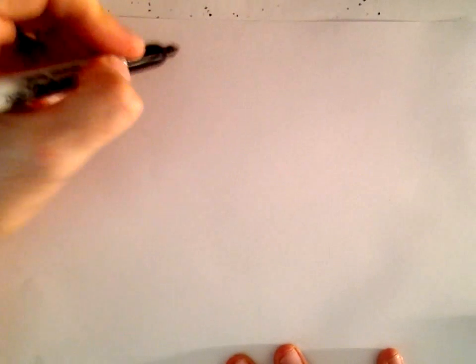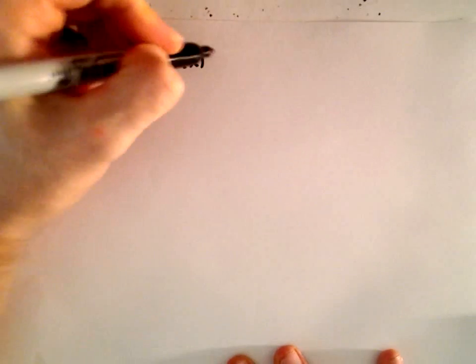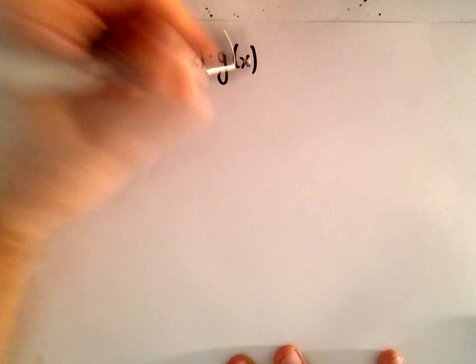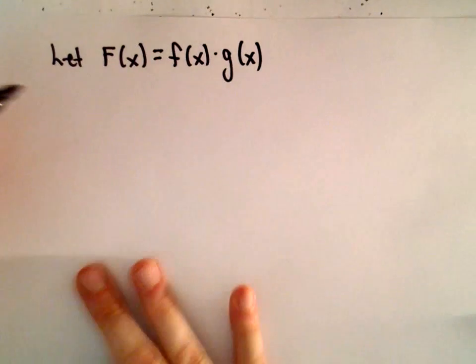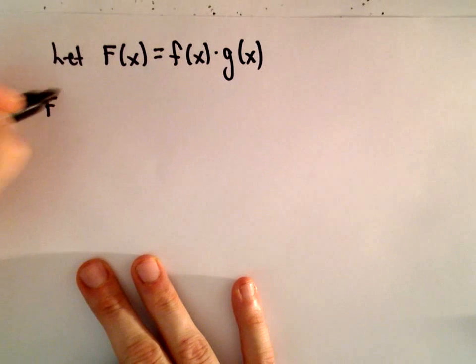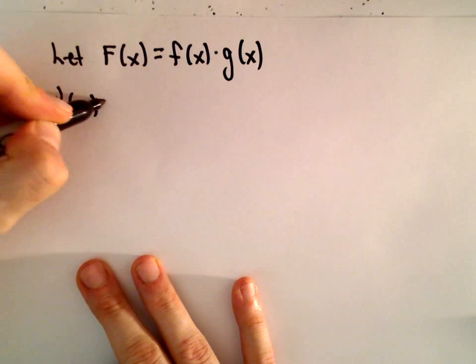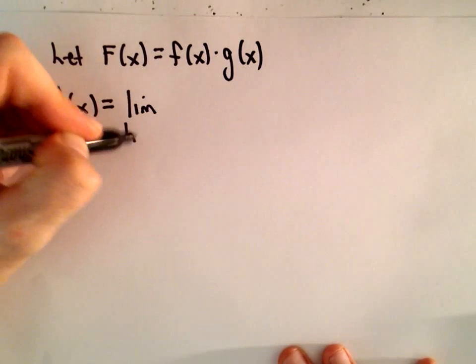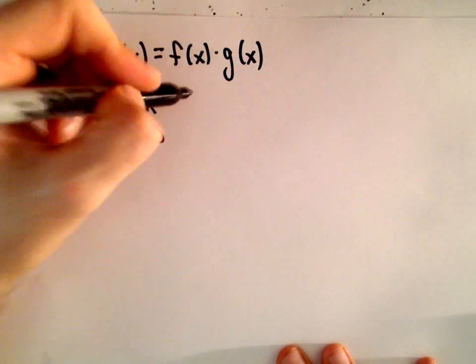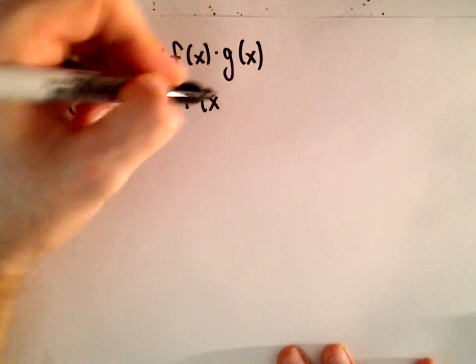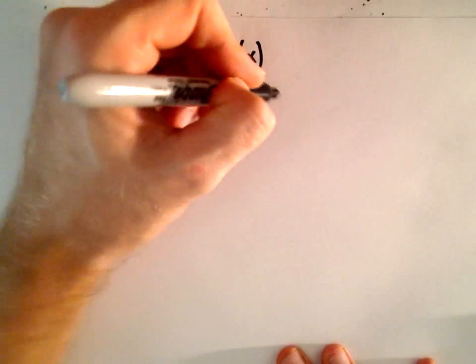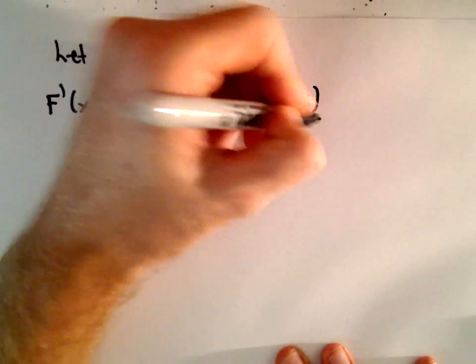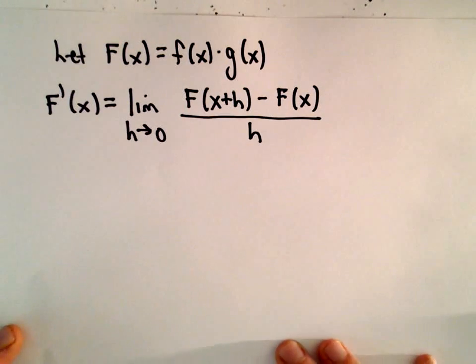What I'm going to do is let capital F of x equal a product, little f of x times little g of x, and we're just going to use the definition of a derivative. So F prime of x — that's what we want to figure out. According to the definition, that will be the limit as h approaches 0 of capital F of x plus h minus capital F of x, all divided by h.